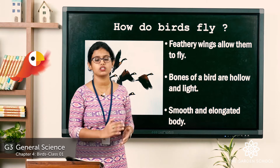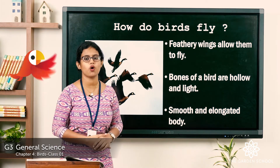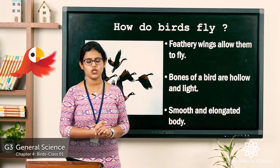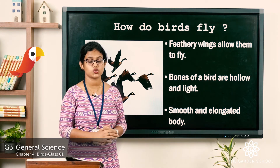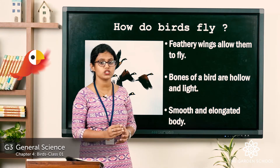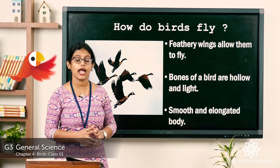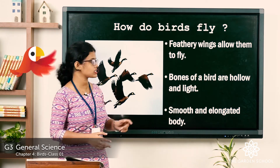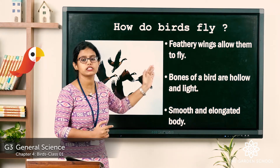The third special feature is that these birds have a smooth and elongated body. Elongated means longer. This smooth and elongated body helps them to cut through the air. Have you seen aeroplanes? Aeroplanes are modeled in the shape of a bird's body — they are smooth and elongated so they can cut through the air. Birds fly with their wings and flap them in an upward and downward direction, which makes them move forward.